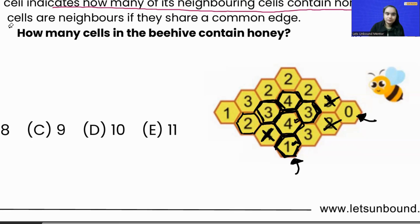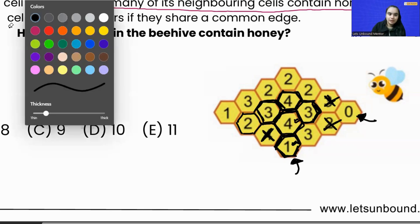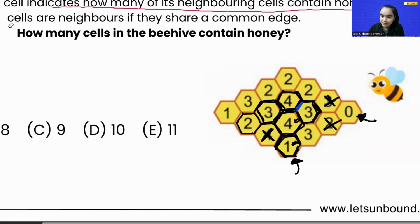Now if we focus on number three, this means three of its neighboring cells will contain honey. One of those neighbors can be this four, because they share a common edge.